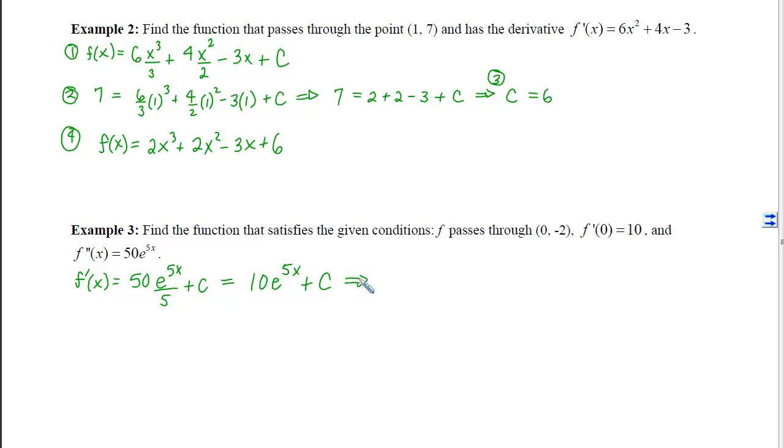So I can now plug in the f' information and I'll get 10 out when I plug a 0 in. That means my capital C is going to be 0. And because I have to do this twice, I'm going to have two arbitrary constants. So I just found my first one and now I know that f' is 10e^(5x).